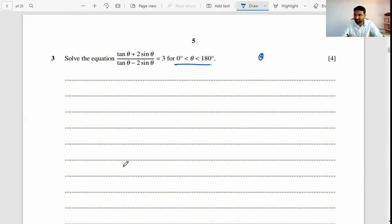We'll solve this question. Look at here: (tan θ + 2 sin θ)/(tan θ - 2 sin θ) = 3. So tan θ is equal to sin θ upon cos θ. Sin θ upon cos θ plus 2 sin θ upon...